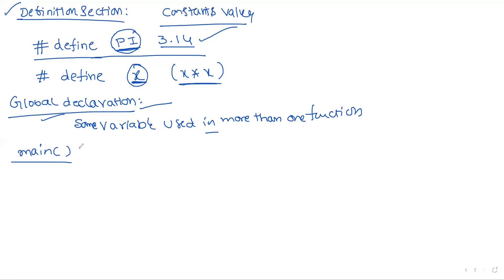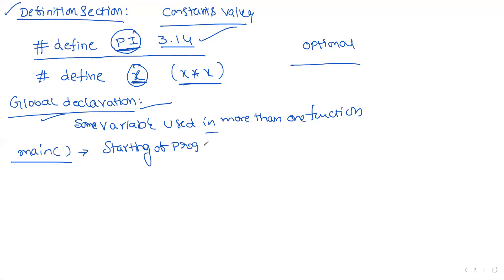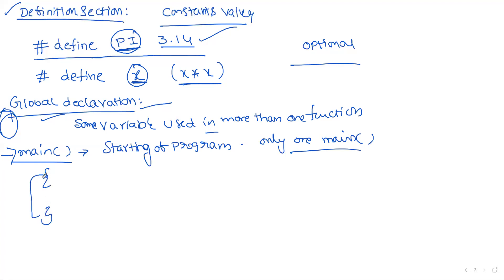The next section is the main function section — this is the most important one. Up to now, all sections we discussed are optional; you may or may not write them. But the main section is compulsory. Main specifies the starting point of the program — execution starts from the main function only. Only one main is allowed in a program, and inside the main we have an opening and closing brace.